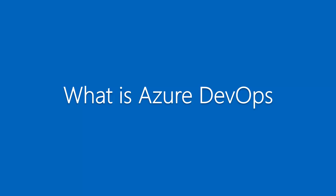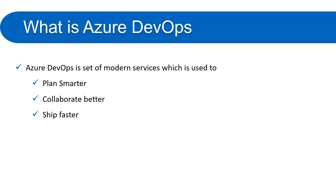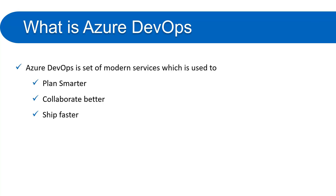First, let's understand what Azure DevOps is. Azure DevOps is a set of modern services used to plan smarter, collaborate better, and ship faster. This represents the development lifecycle of any product: first you plan, then you work, then you deploy. You plan in a smart way, collaborate better on the development side, and focus on deployment for shipping. Azure DevOps provides all of these features.